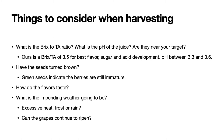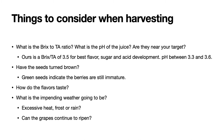Things to consider when harvesting: What is the Brix to TA ratio? What is the pH of the juice? Are they near your target values? Ours in our vineyard is about 3.5 for the Brix to TA ratio, which we've found gives the best flavor, sugar, and acid development in our environment. And ideally we'd like the pH to be between 3.3 and 3.6 — no higher than that, although grape juice can be adjusted with tartaric acid to lower the pH if necessary.